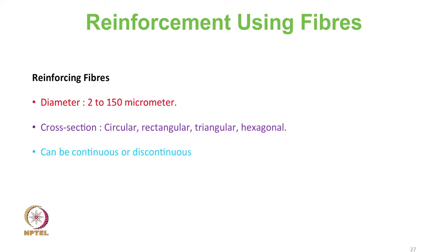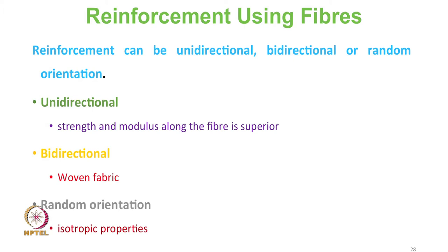Continuous fibres, or filaments, are long and in theory offer a continuous path by which load can be carried by the composite material. For discontinuous fibres, the load is carried by the short fibre and shared by the matrix, which transmits it to the adjacent fibre.